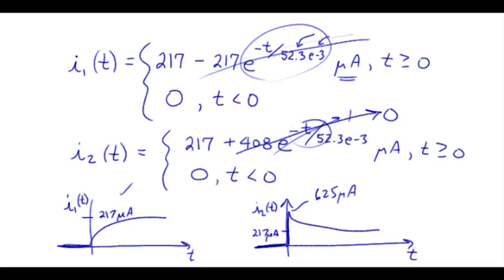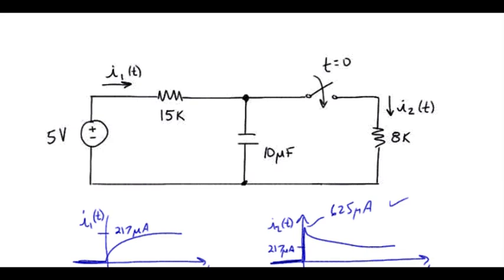I'm going to take these graphs and place those back on the original circuit to make sure we've got good physical understanding of what's happening. Let's jump to this interesting behavior where they both ended up at 217 microamps in the end. In the final DC steady state where this is a short circuit and this goes back to an open, then I1 is the same thing as I2.